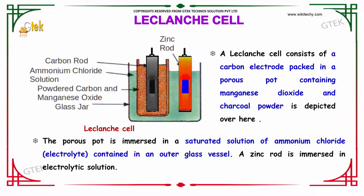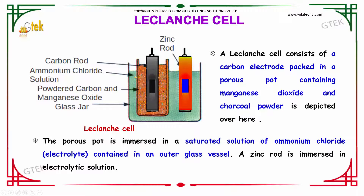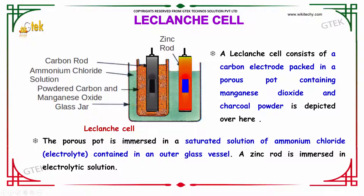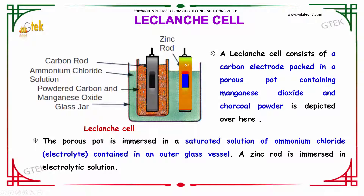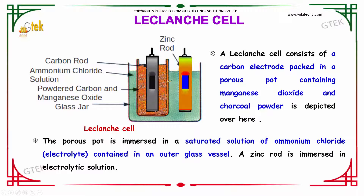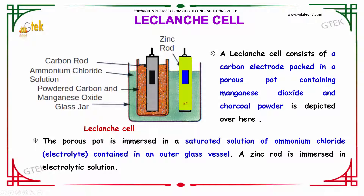We will talk about the Leclanche cell, which is another kind of primary cell. It has a carbon rod and ammonium chloride. It's powdered carbon and manganese oxide, and it's placed in a glass jar with a zinc rod in it. The Leclanche cell consists of a carbon electrode packed in a porous pot containing manganese dioxide and charcoal powder, which is depicted here. The porous pot is immersed in a saturated solution of ammonium chloride as electrolyte, contained in an outer glass vessel, and the zinc rod is immersed in the electrolyte solution.